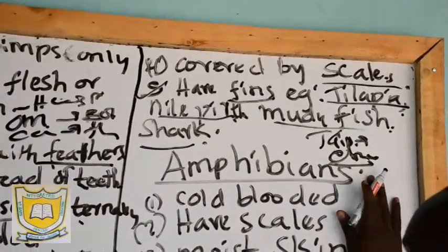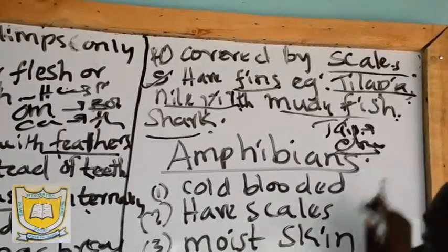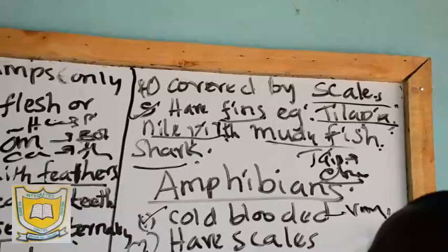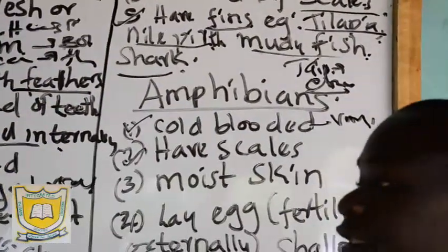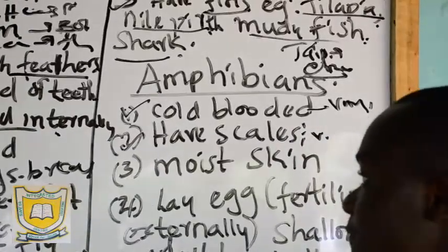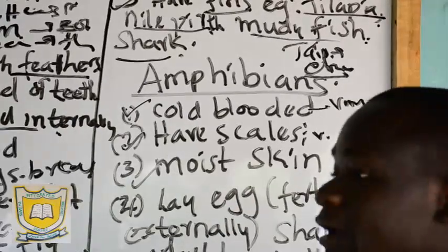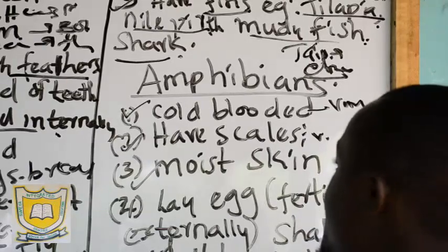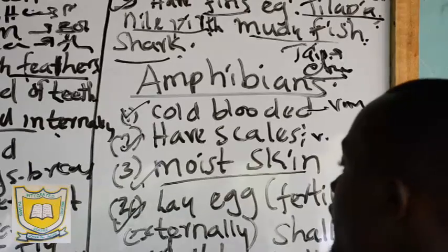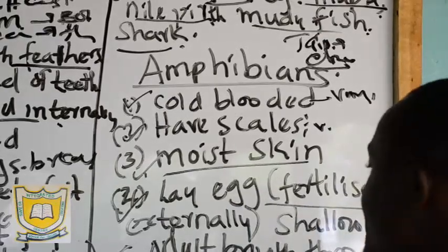Lastly, we discuss amphibians, which are under cold-blooded. Characteristic number one: they are cold-blooded with varying body temperature. Number two: their bodies have scales — when you touch them, they feel rough. Number three: they have moist skin — when you touch it, there is a lot of moisture on those scales. Number four: they lay eggs, just like fish, and these eggs are fertilized externally.